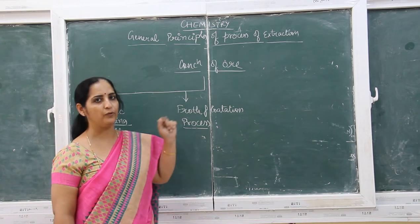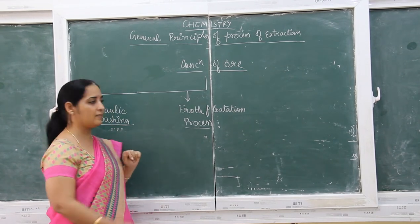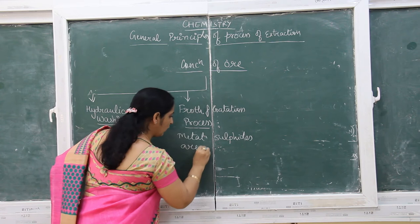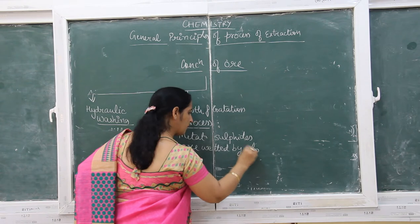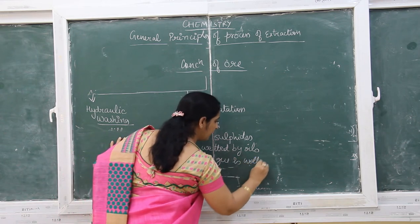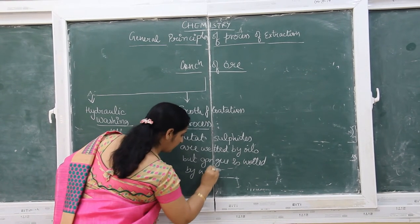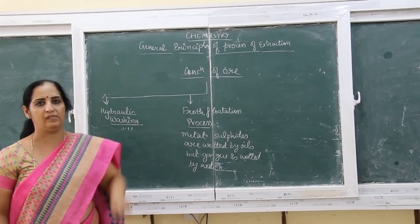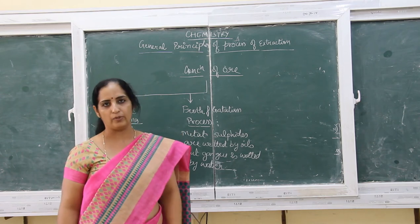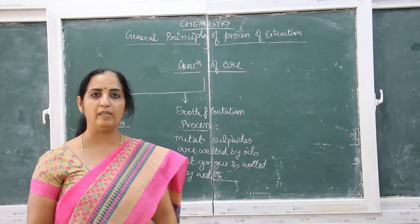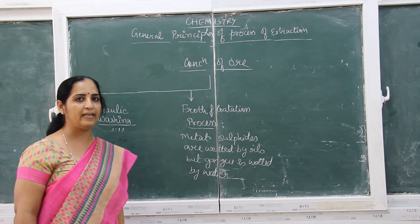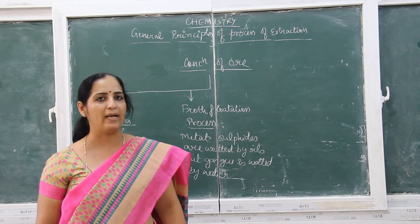If asked the principle of the froth flotation process, the answer is: metal sulfides are wetted by oil, whereas gangue is wetted by water. The principle of hydraulic washing was the difference in the gravity property of metal compound and gangue. These principles are very important because in exams they often ask you the principle of each particular process.